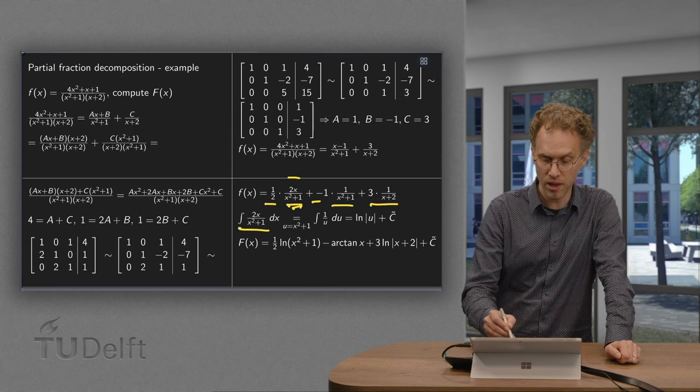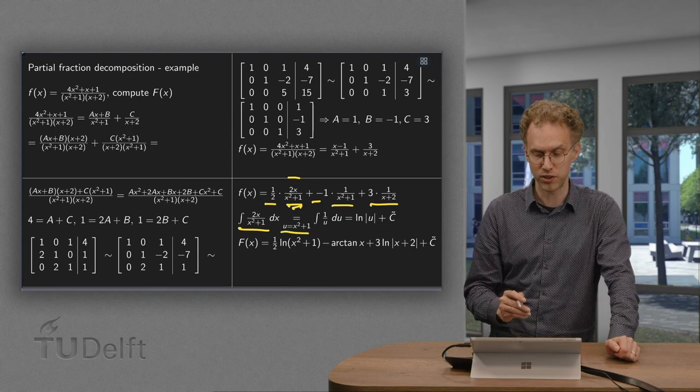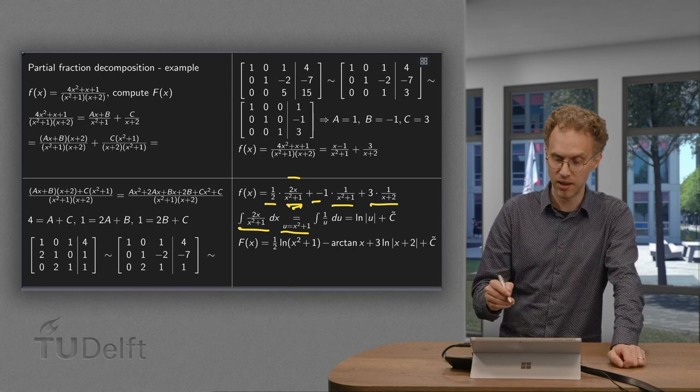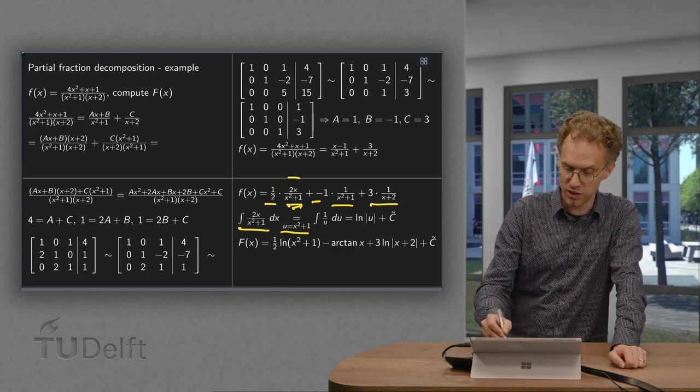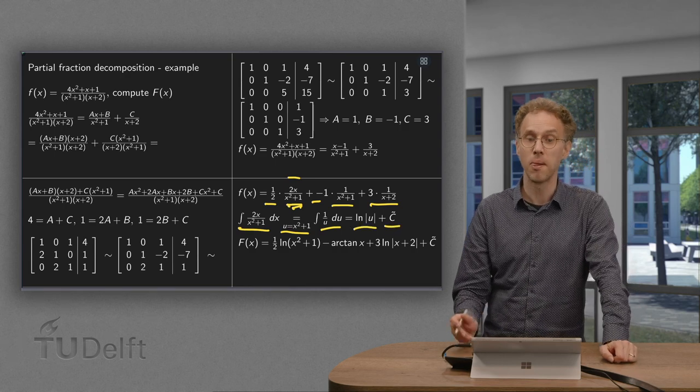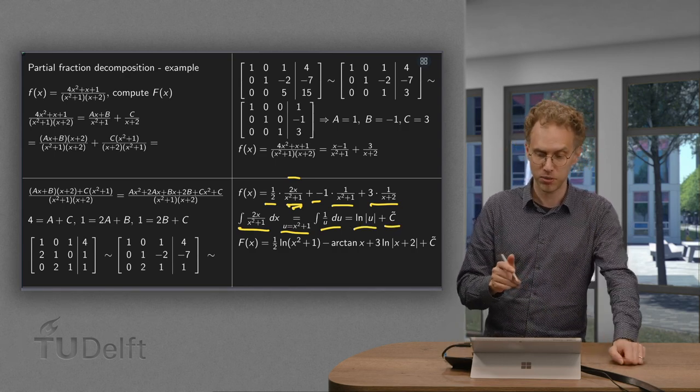We use the substitution rule. Use u equals x squared plus 1. Gives you du equals 2x dx, which is exactly in the numerator. Gives us a 1 over u du. Gives us the ln of u plus some integration constant. And now we have all three terms.